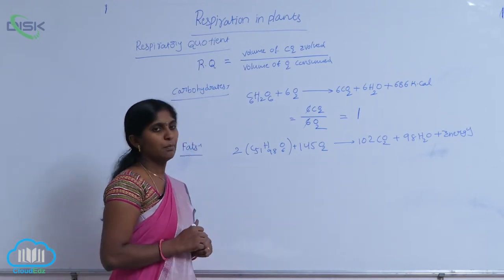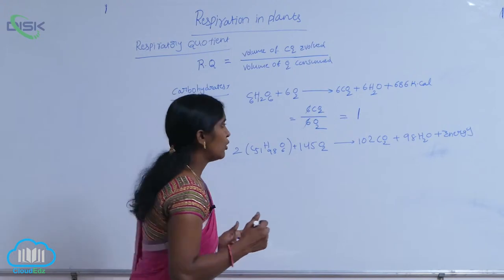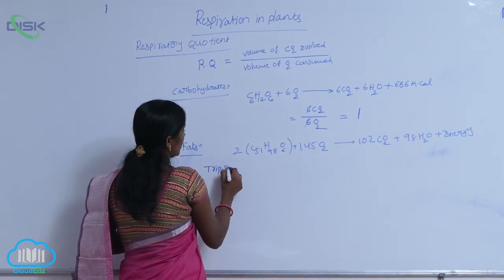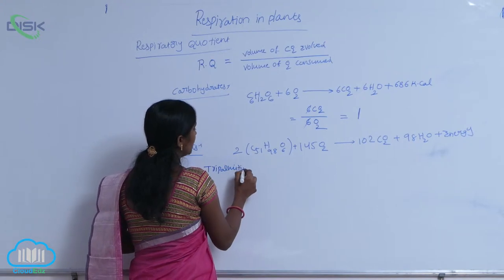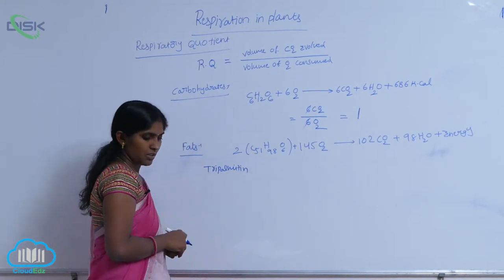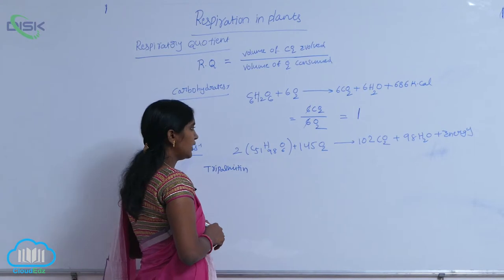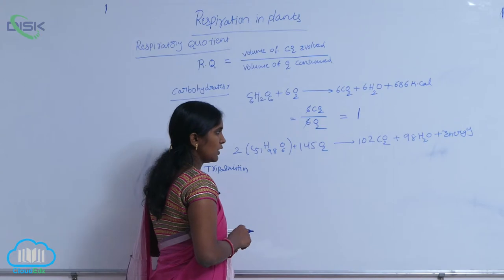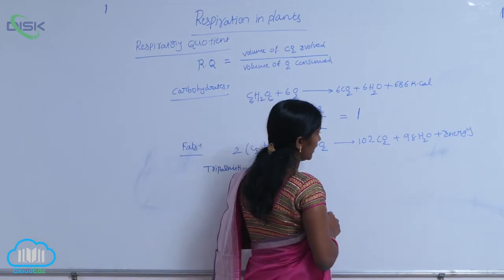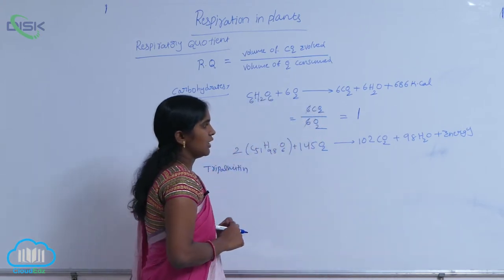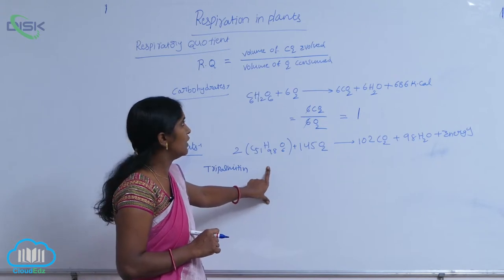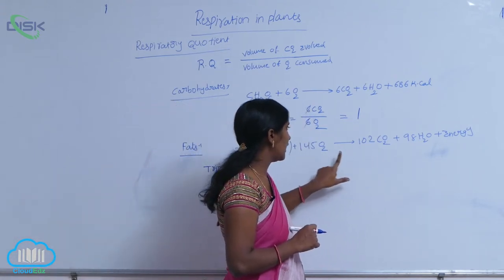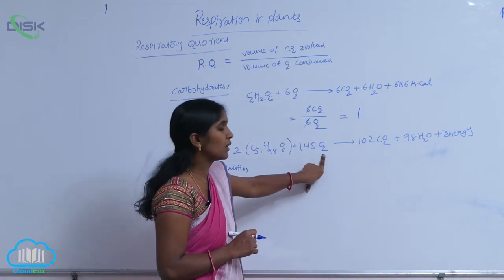The example is tripalmitin. So, tripalmitin is one type of fatty acid. When it is involved in the respiration, that gives the energy and here in the equation given the volume of CO2 evolved and volume of O2 consumed.